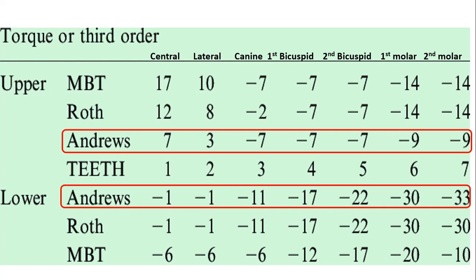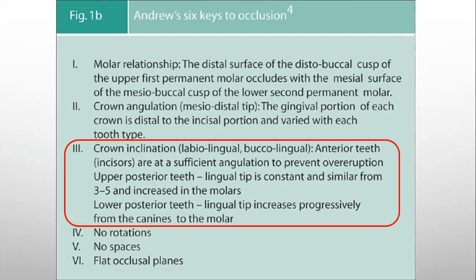And in lower arch, negative torque values increase progressively as you go backward from incisor till second molar. Just give it a read, now it will be comparatively easier for you to understand.